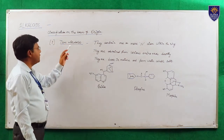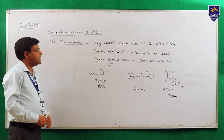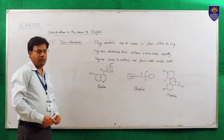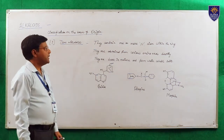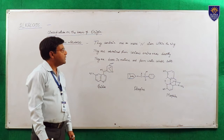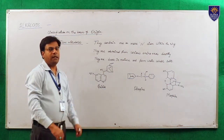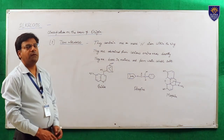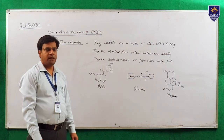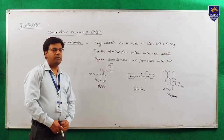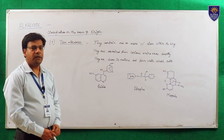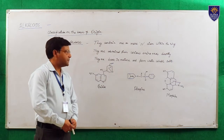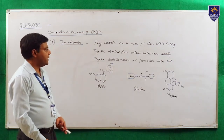The first type is true alkaloids. True alkaloids are those alkaloids which contain one or more nitrogen atom in their ring, and they are directly derived from amino acids like ornithine, tryptophan, and tyrosine. They are basic in nature and toxic in nature, and these alkaloids form water-soluble salts. Examples are quinine, atropine, and morphine.